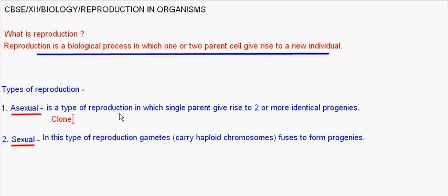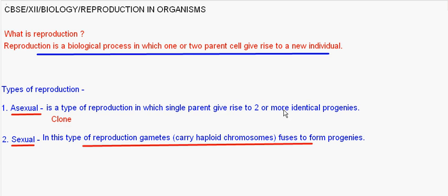Sexual Reproduction. It is a type of reproduction in which gametes are first produced. These gametes carry a haploid number of chromosomes — that is, half the total number of chromosomes present in all other cells of an individual. These gametes fuse to form progenies.